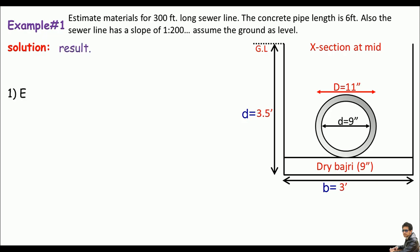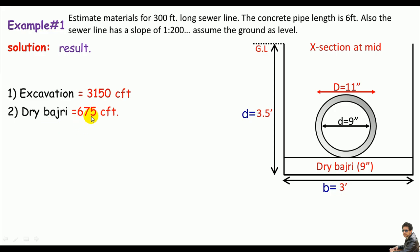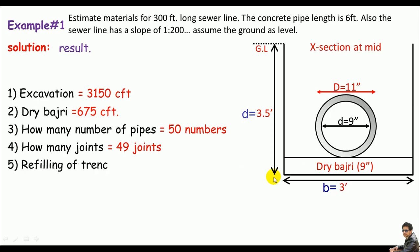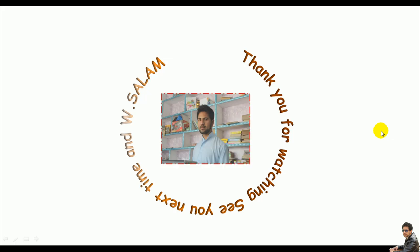To summarize the results: excavation is 3150 CFT, dry bajari is 675 CFT, number of pipes is 50, number of joints is 49, and refilling of the trench is 2277 CFT. That's our complete approach — thank you for watching, see you next time, Assalamu alaikum.